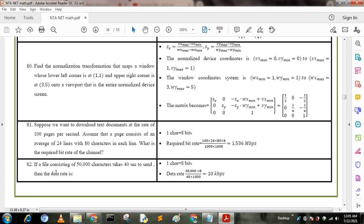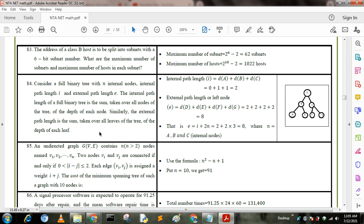Next question: if a file consisting of 50,000 characters takes 40 seconds to send data, what is the data rate? One character equals 8 bits. Data rate equals 50,000 into 8 by 40 into 1000 equals 10 kbps. We know that per character equals 8 bits, so 50,000 into 8. Again, 40 seconds are there. We convert into kilobits, so we divide by 1000 and we get the answer.